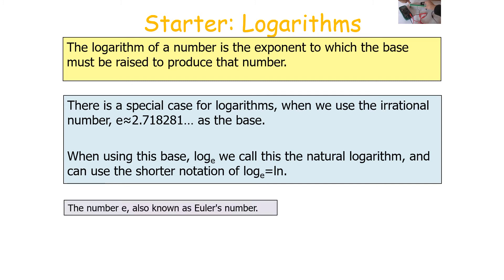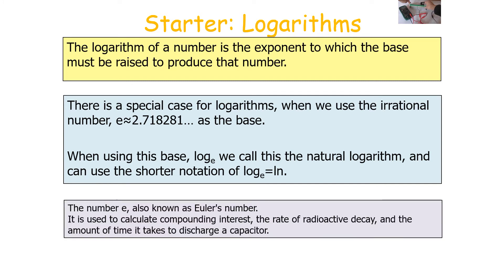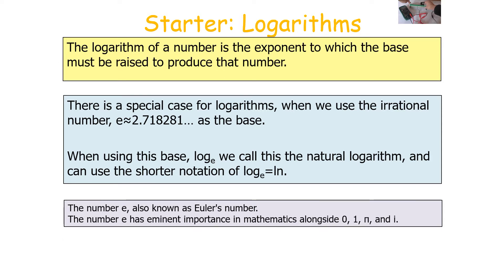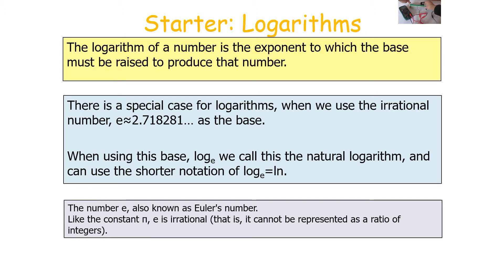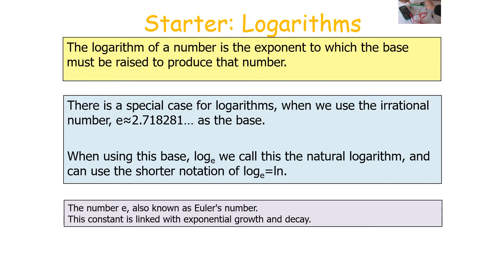The number E is also known as Euler's number. It can be used to calculate things like compound interest, the rate of radioactive decay, and the amount of time it takes to discharge a capacitor. Like the constant pi, E is an irrational number — it can't be represented as a ratio of integers, and it's a constant linked with exponential growth and exponential decay.